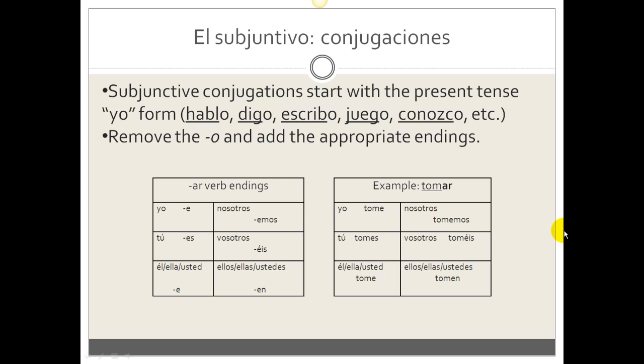AR verb endings: you'll notice that these take the opposite vowel from what the present indicative would. So, e, es, e, emos, éis, en. When we're conjugating the AR verb tomar, it would be: tome, tomes, tome, tomemos, toméis, tomen.